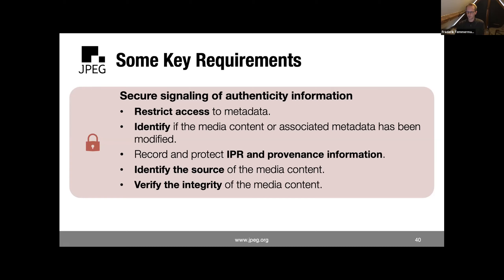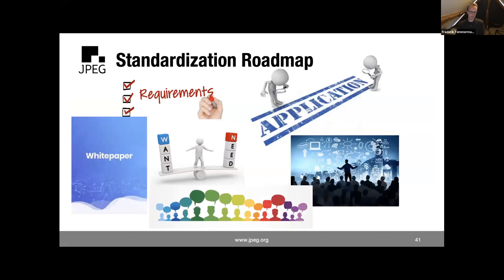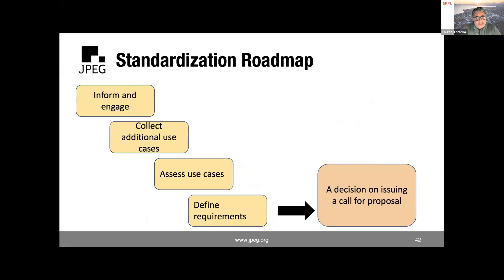We realize that many of these requirements are not trivially achievable technically, but they show what the community needs. What can and cannot be achieved will be determined during the standardization roadmap. The good news is JPEG is used to this process, which always starts with workshops like this one — to inform, engage, collect use cases, assess them, define requirements, and then decide whether to issue a call for proposals.